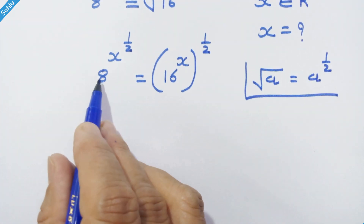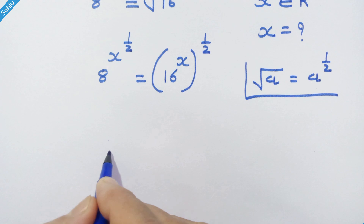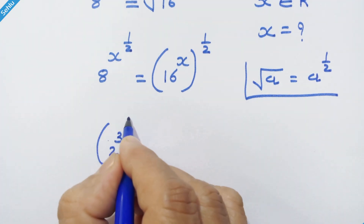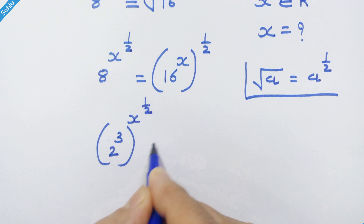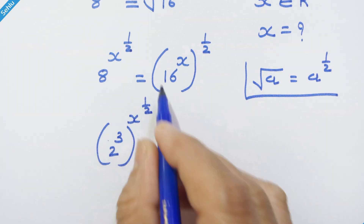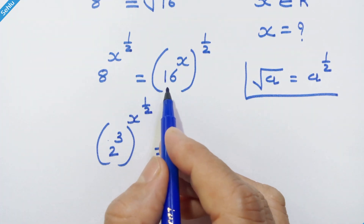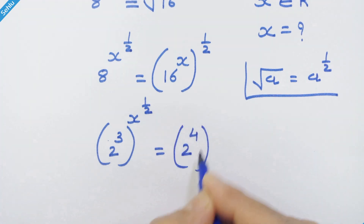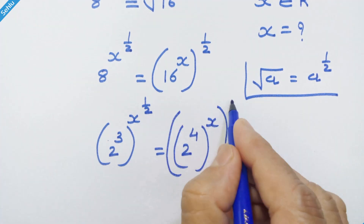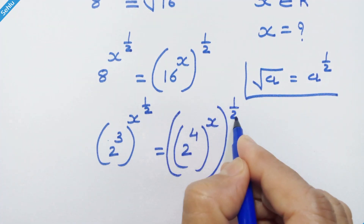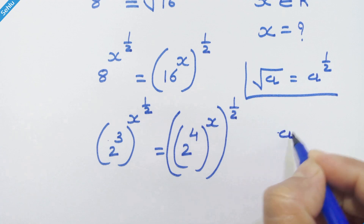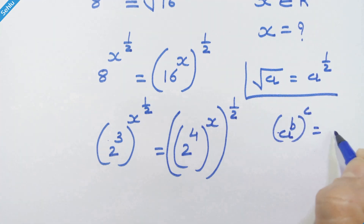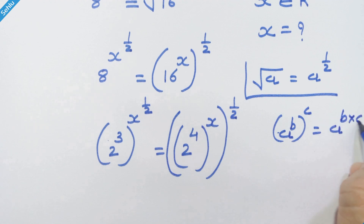Now 8 is 2 cubed, so we can write (2³) whole raised to (x raised to 1/2) is equal to — and 16 is 2 raised to 4 — so (2⁴) whole raised to (x) whole raised to 1/2. Now if we have a raised to b, whole raised to c, then it can be written as a raised to b times c.